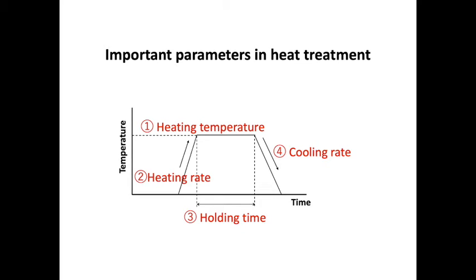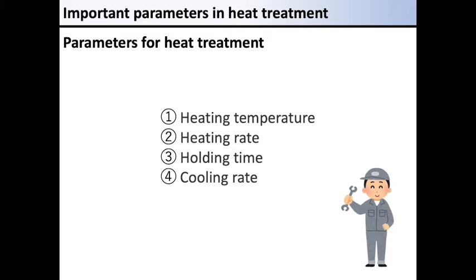Here, I am introducing the heating and cooling conditions, important parameters in heat treatment. By adjusting the heating and cooling conditions, the crystalline structure of materials are modified. Four important parameters for heating and cooling heat treatment are: heating temperature, heating rate, holding time, and cooling rate.